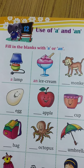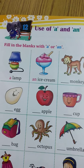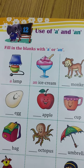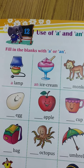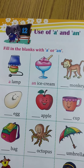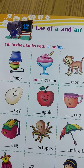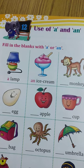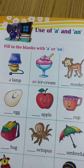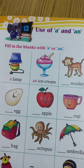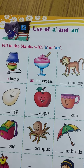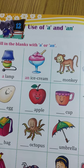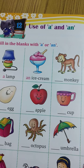How many vowels are there? Five — A, E, I, O and U. And the rest of the alphabets are called consonants. This is the main concept which we need to understand about A and AN.